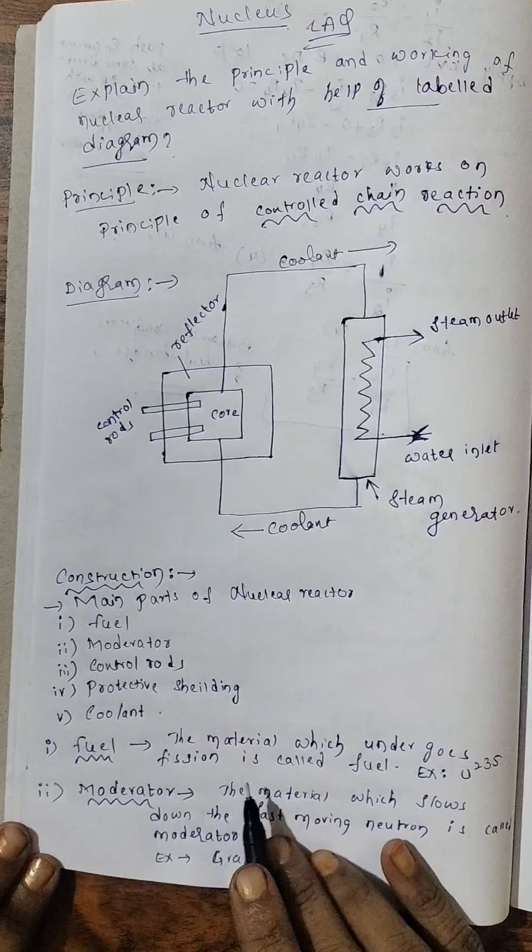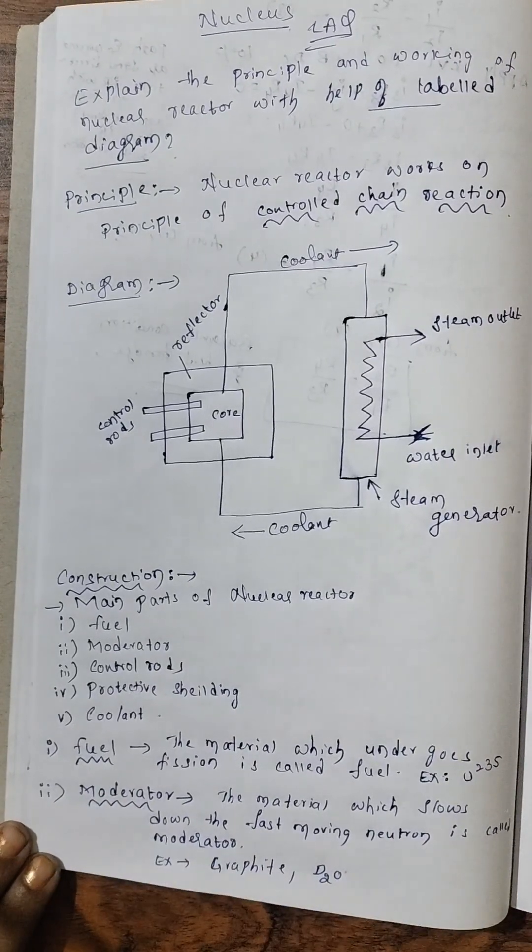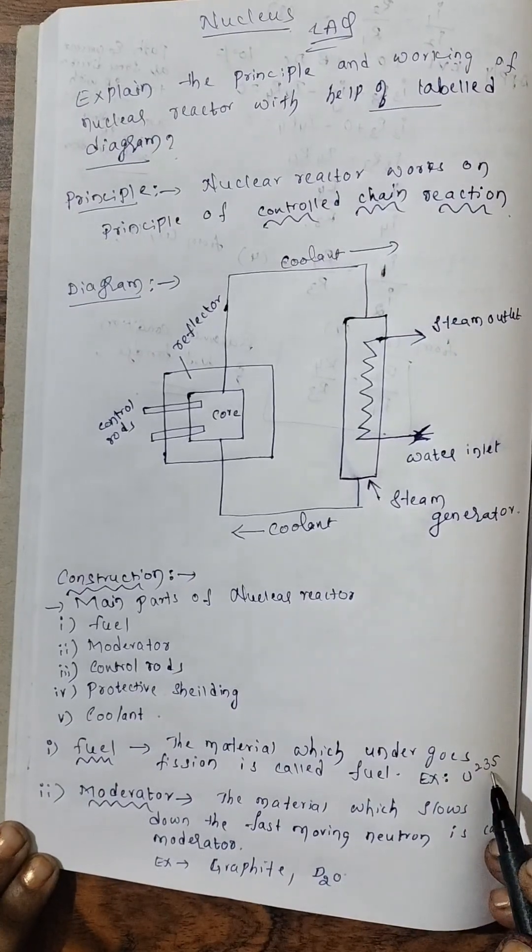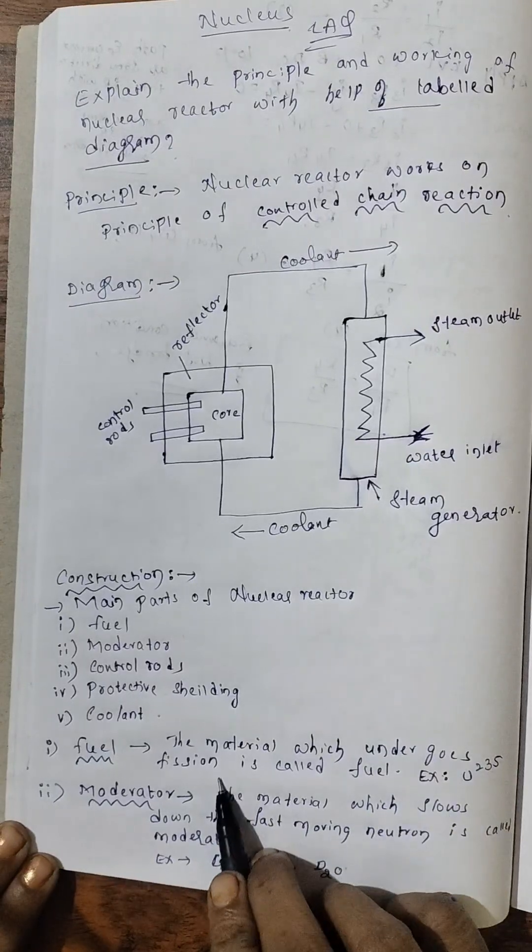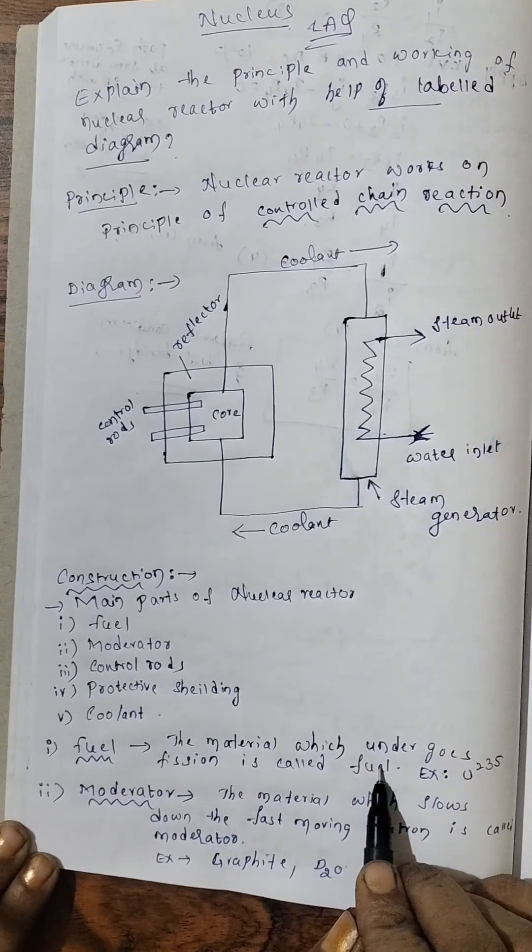Now one after other, let us discuss about this. First, fuel. Nothing but uranium U-235. The material which undergoes fission process we call as fuel.